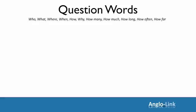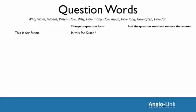To formulate questions with question words, simply change your statement into a question, add the question word, and then remove the answer. For example: 'This is for Susan.' Let's ask a question with 'who.' Change to question form, add 'who,' and remove 'Susan.' Who is this for?